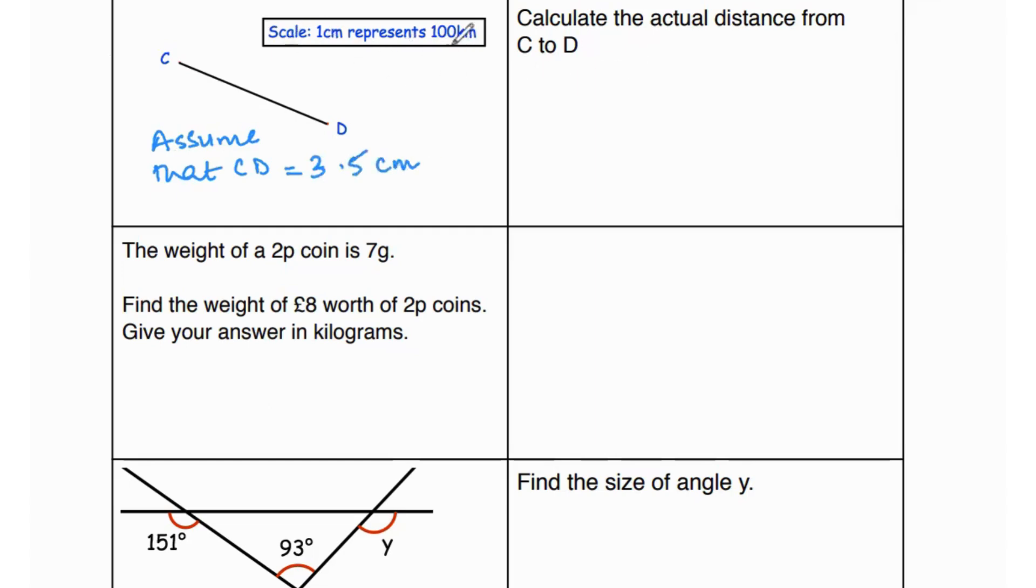Based on the scale, one centimeter equals 100 kilometers. So to find the actual distance, we will multiply 3.5 with 100, and that gives us 350 kilometers. That's your answer.